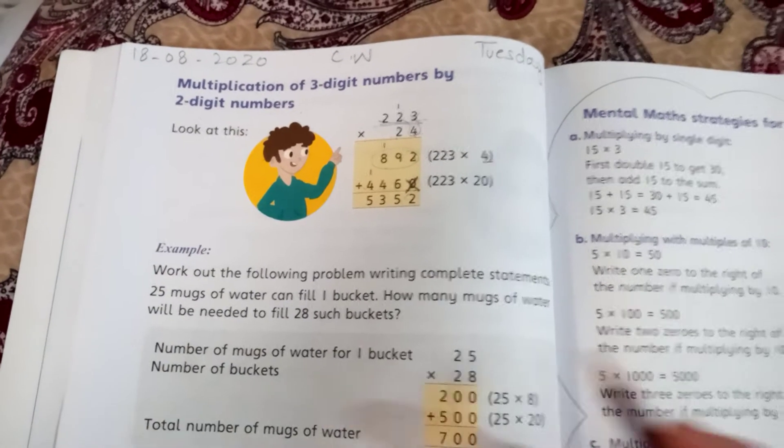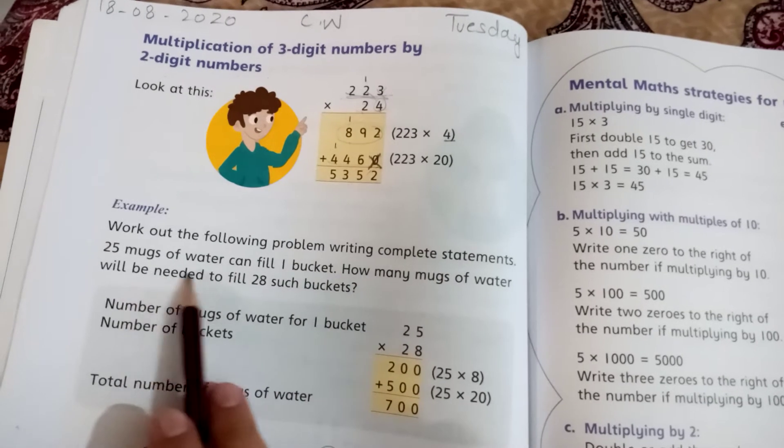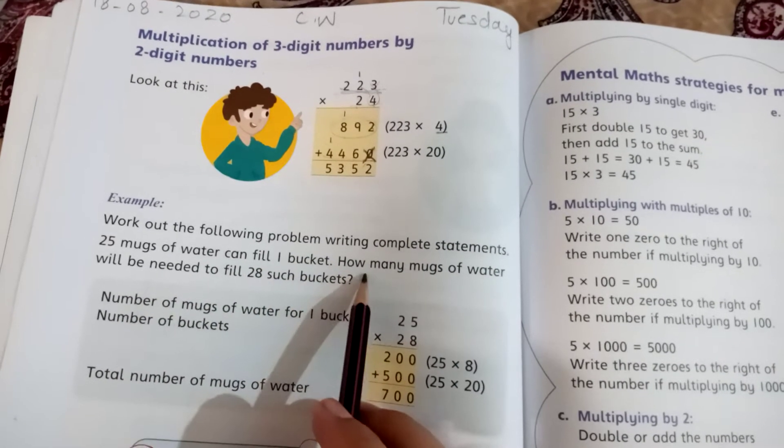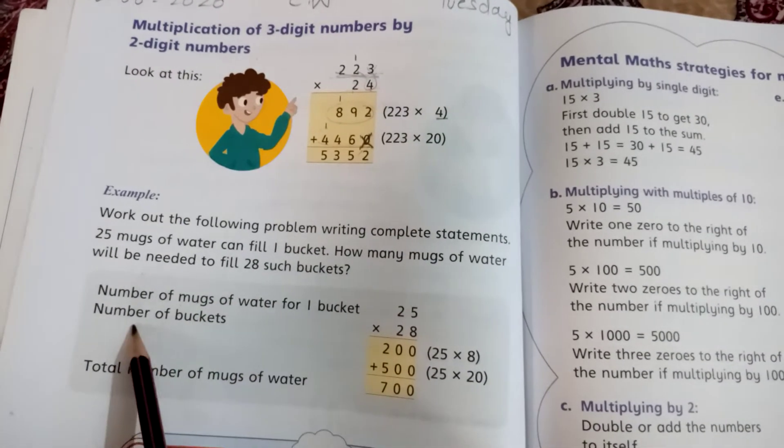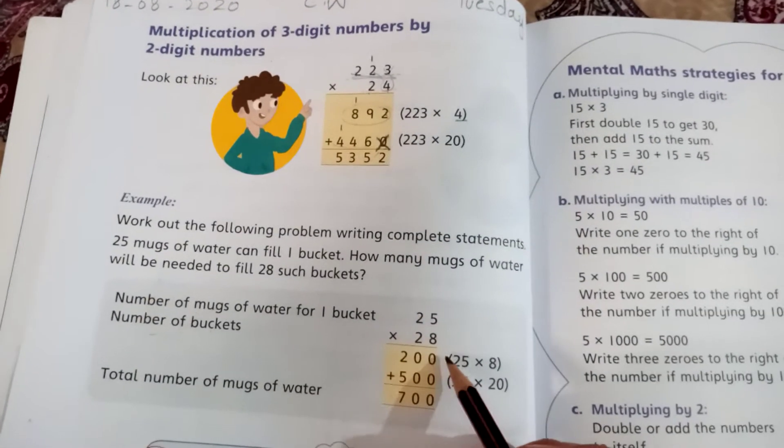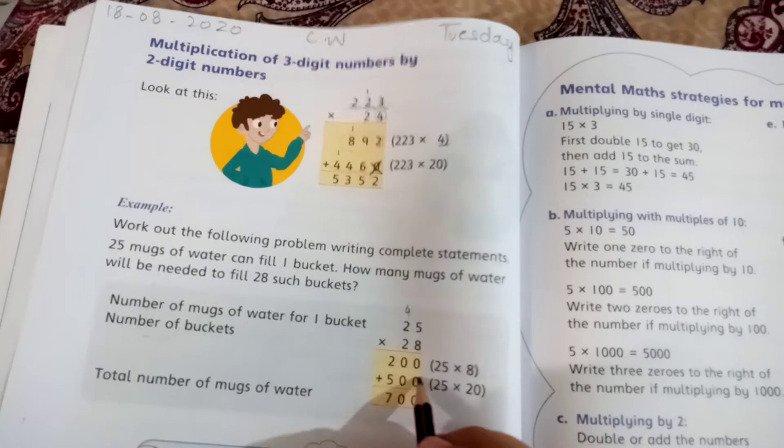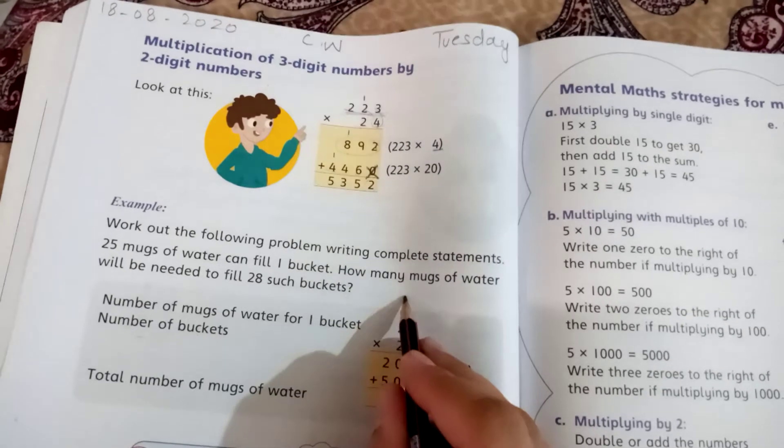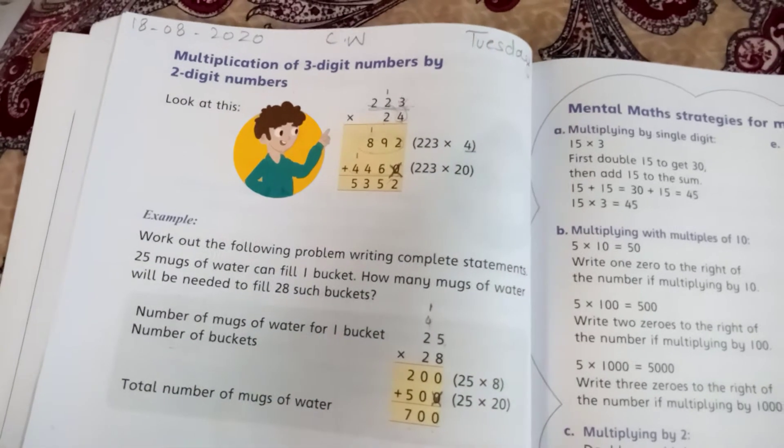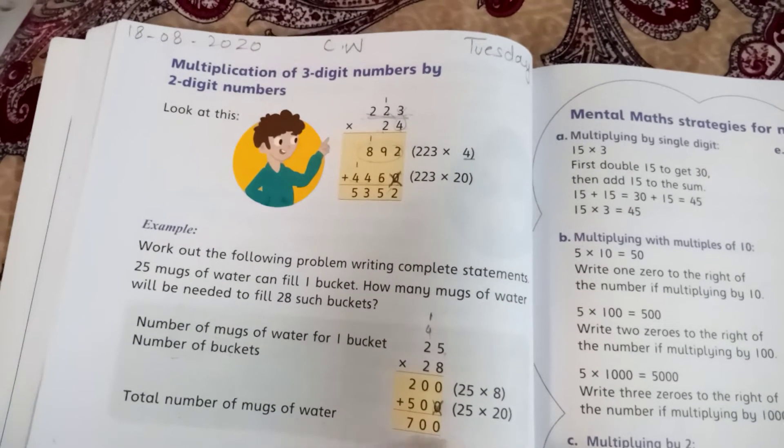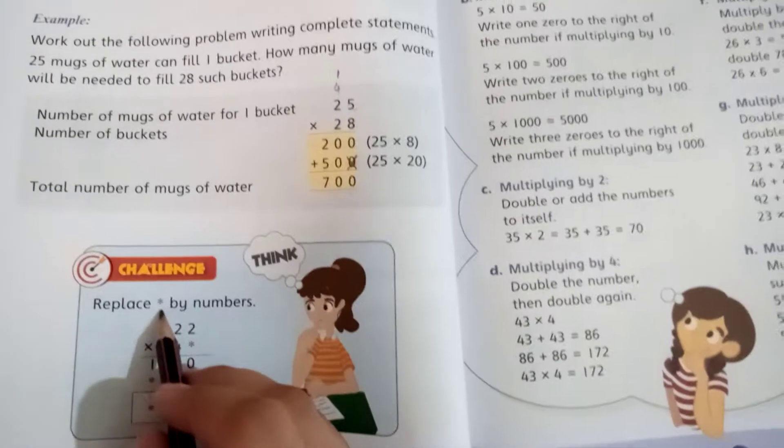Work out the following problem writing complete statements: 25 mugs of water can fill one bucket. How many mugs of water will be needed to fill 28 such buckets? Number of mugs for one bucket times number of buckets. 8 times 5 is 40, carry 4. 8 times 2 is 16 plus 4 is 20.